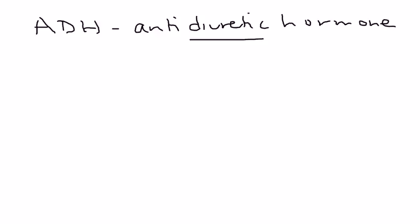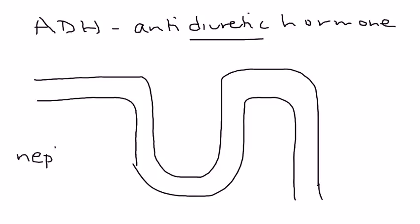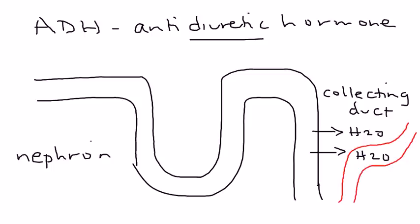Diuretic is something that makes you pee, so antidiuretic is the opposite. Let's draw a diagram here to illustrate this. This is a diagram of the nephron, which is the unit component of the kidney — there's a million of them or more in the kidney. ADH works on the part of the nephron known as the collecting duct. What ADH does is it brings back water into the bloodstream from the urine, so the urine will therefore be concentrated.